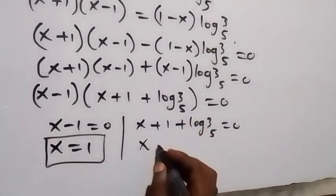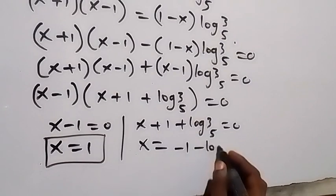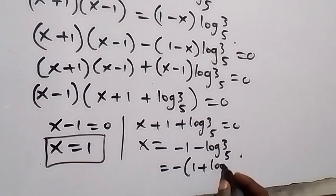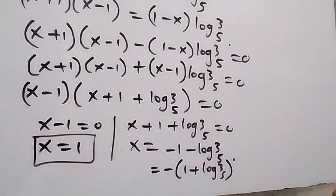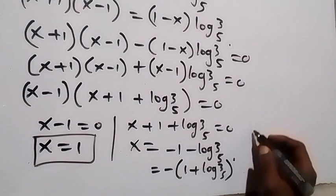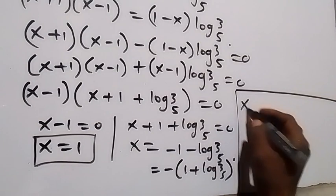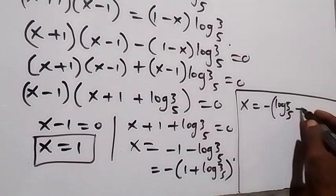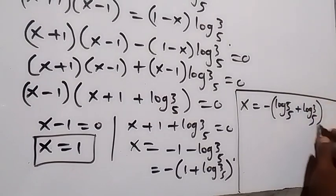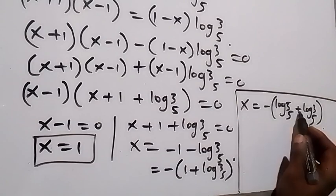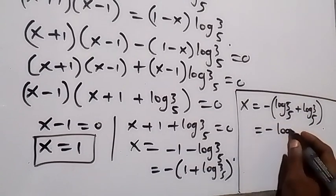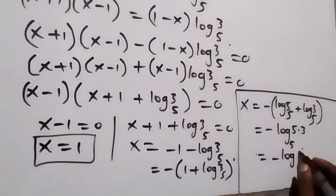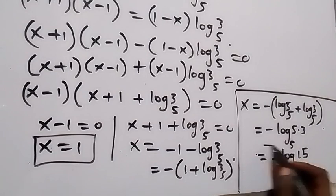From the second case, x equals negative 1 minus log 3 to base 5. Factoring out minus 1 gives x equals minus (1 plus log 3 to base 5). We can express 1 as log 5 to base 5, so this becomes x equals minus (log 5 to base 5 plus log 3 to base 5). Applying the law of logarithms, we multiply to get x equals minus log 15 to base 5.